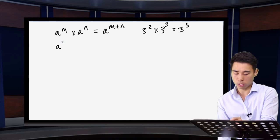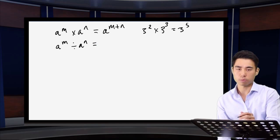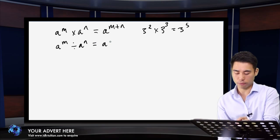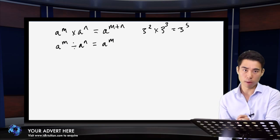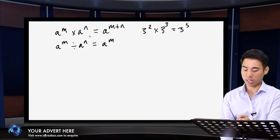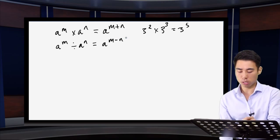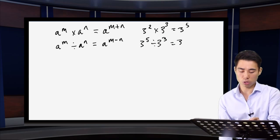Second, division. Division is the inverse operation to multiplication, so you'd expect the reverse to happen: if I have something raised to a power divided by that same number raised to a different power, I subtract my powers. So three to the five divided by three to the three gives me three to the power two.